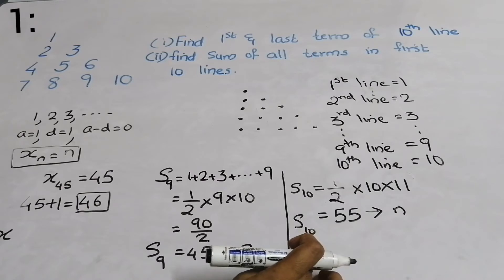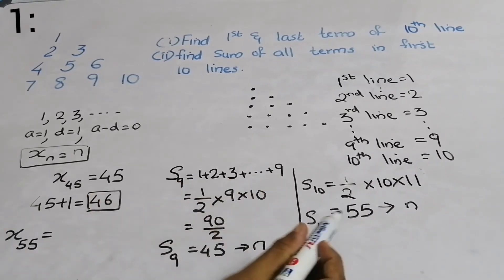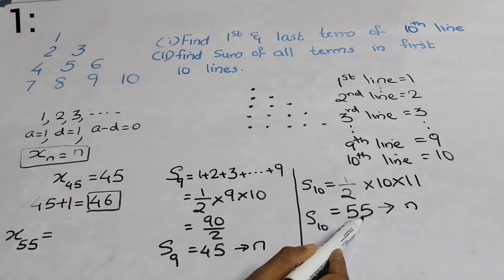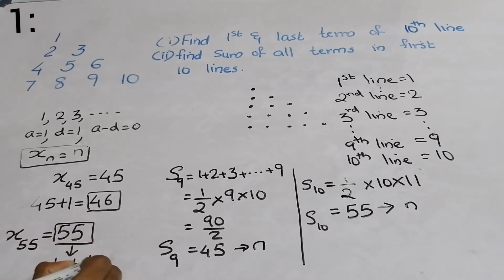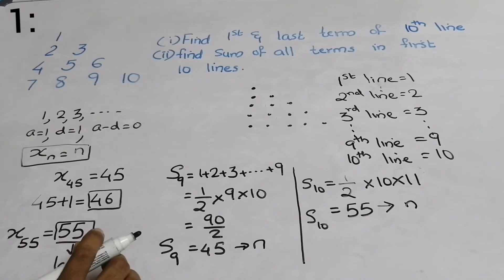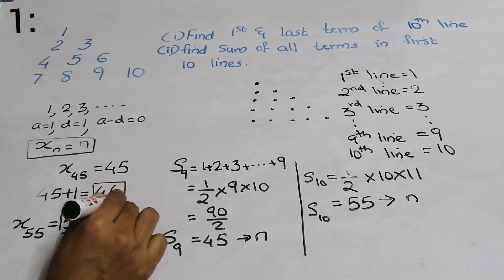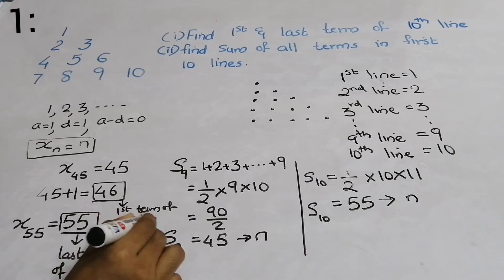Now for x(55): I want to know what term appears in the 55th position, because that is the last term position of the tenth line. Since xn = n, x(55) = 55. So 55 is the last term of the tenth line, and 46 is the first term of the tenth line.